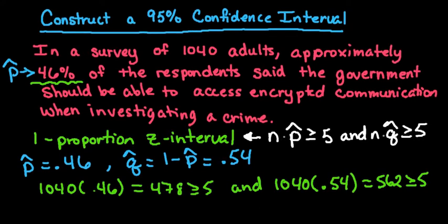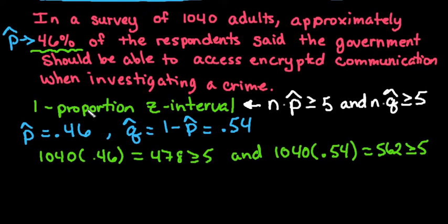Since our conditions are met, we're going to use the one proportion z interval. And depending upon your book that you use, you may have a different formula.